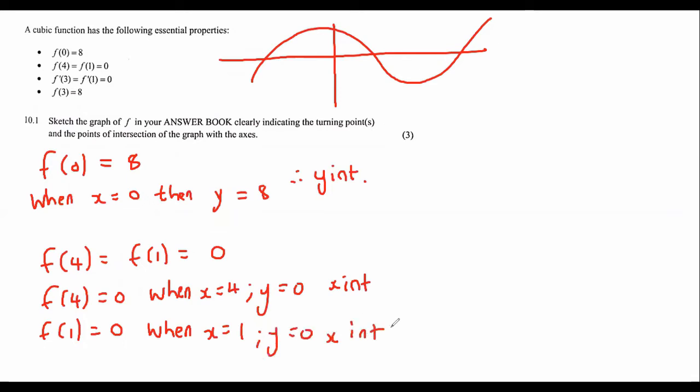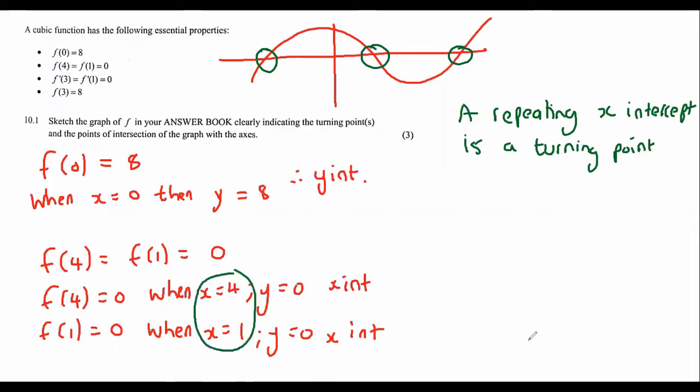Now immediately, I become a little bit concerned when I see that because I know that a cubic graph is supposed to have 3 x-intercepts. However, they are only giving me 2. What that could mean is that they purposefully for not giving me the third one, or the more common reason, is that one of those x-intercepts is also a turning point. A repeating x-intercept is a turning point.